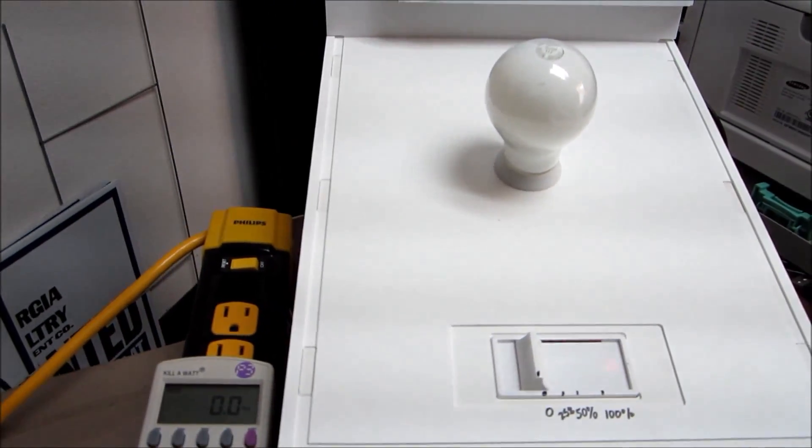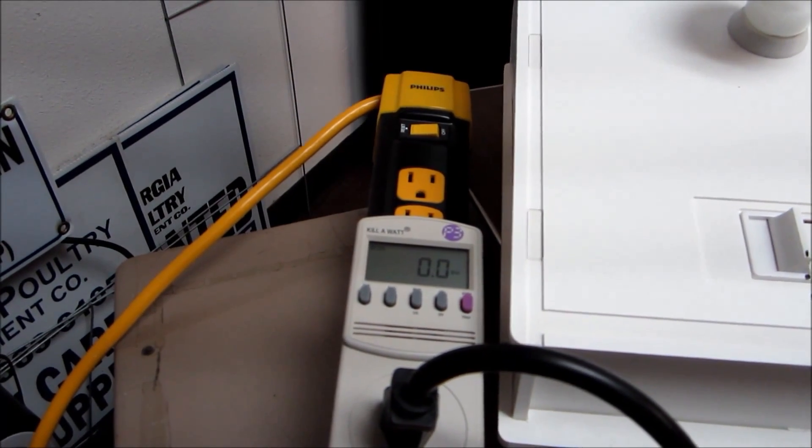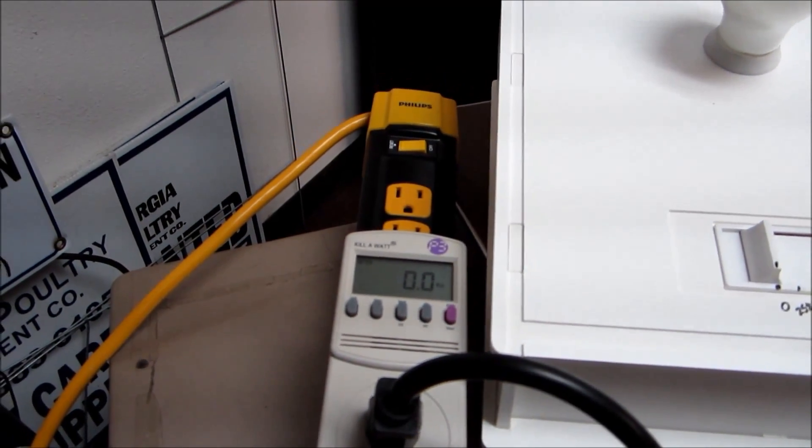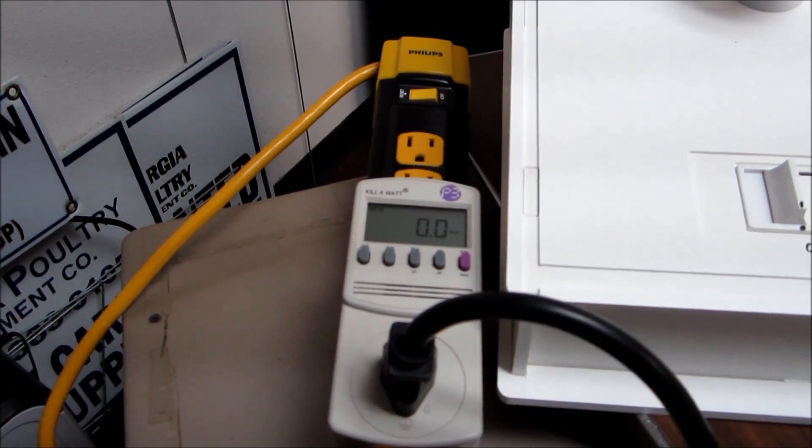What we have here is just a basic slide manual dimmer and a wattage meter that you can pick up from any home improvement store or the internet. They run about $18 to $28 depending on the model.